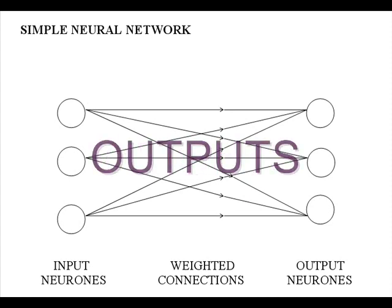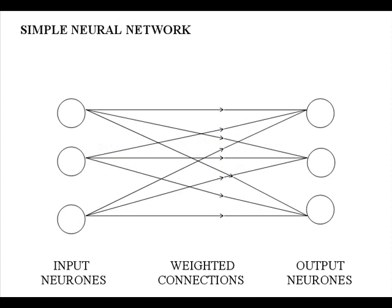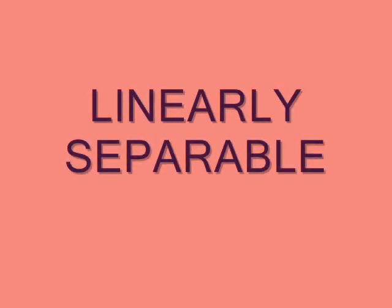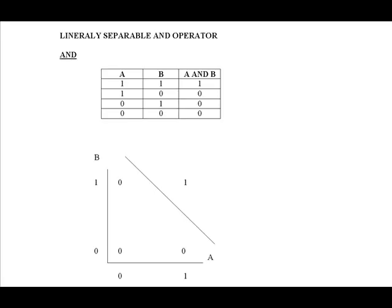A simple neural network like this works well provided the functions that it is dealing with are linearly separable. For example, the AND function is linearly separable, as a straight line can be drawn between the possible outputs.